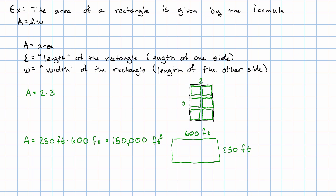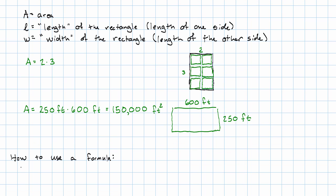150,000 feet times feet will be feet squared, so square feet. In both of these examples we've seen how we use a formula. In real life we might have to take measurements to do this, but first we find out the values of all but one of the quantities in the formula.